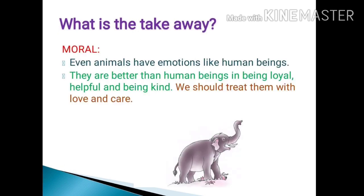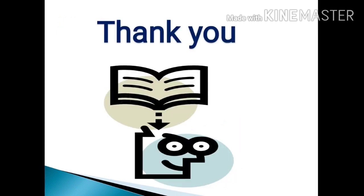We have come to the end of the lesson. The moral we learn is that even animals have emotions like human beings. Sometimes animals are better than human beings in being loyal, helpful, and kind. So we must learn to treat them properly, love them, and take care of them. Children, remember the Kerala incident — such things would never happen if we love and take care of animals properly. Hope you all enjoyed the lesson. Let's meet in the next video. Thank you.